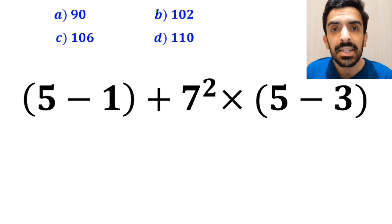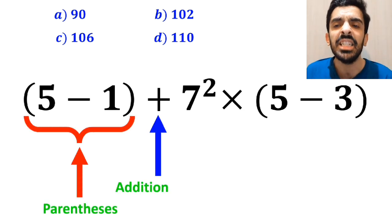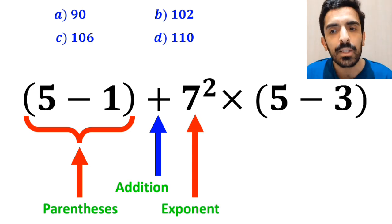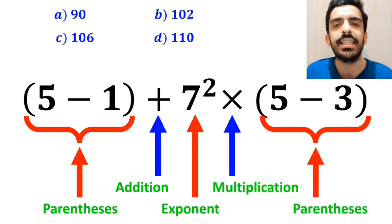Alright, as you can see on the screen in this expression, first we have parenthesis, then an addition sign, followed by an exponent, then a multiplication, and finally another parenthesis.